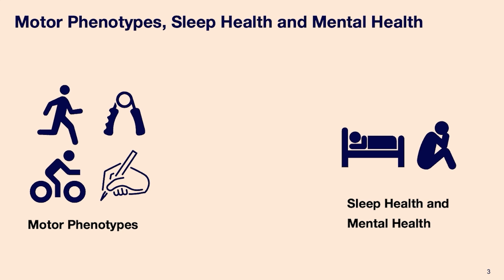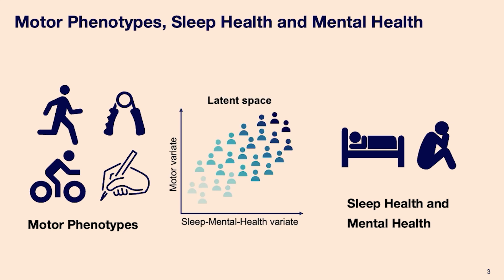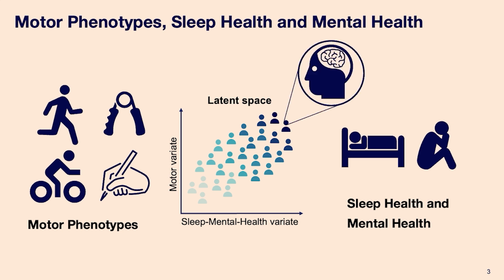Sleep covers aspects such as insomnia, sleep duration, chronotype, and mental health — recent depressive symptoms and neuroticism. While a lot of studies have investigated individual motor measures and how they relate to sleep and mental health, not so much has been done to look at the multivariate perspective — how these domains in the broader sense connect to each other and how the neurobiological basis of that relationship looks like.